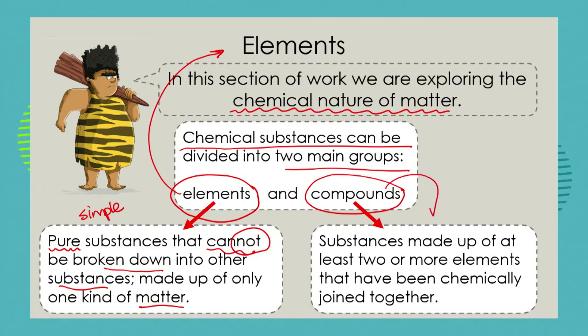When we talk about a compound, on the other hand, we're talking about substances that are made up of at least two or more elements that have been chemically joined together, and when they are chemically joined together they make not a mixture but a completely new substance. Elements can combine together to make compounds — they don't just mix together like water and soil being mixed in a glass.